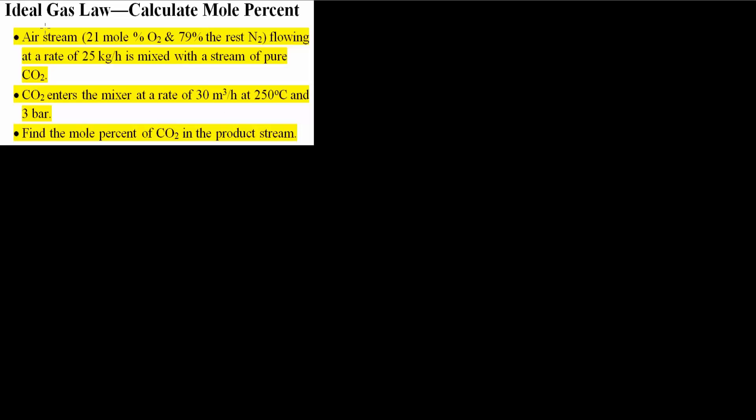In this video, we will be using Ideal Gas Law to calculate mole percent. We have an airstream which is 21 mole percent oxygen and 79 percent nitrogen, flowing at a rate of 25 kilograms per hour, mixed with a stream of pure CO2. CO2 enters the mixer at a rate of 30 meter cube per hour at 250 degrees Celsius and 3 bar. We want to find the mole percent of CO2 in the product stream.